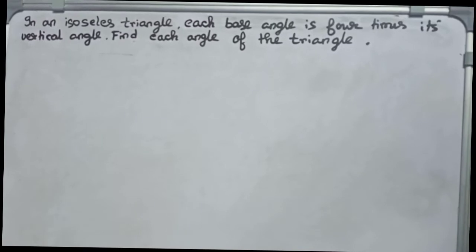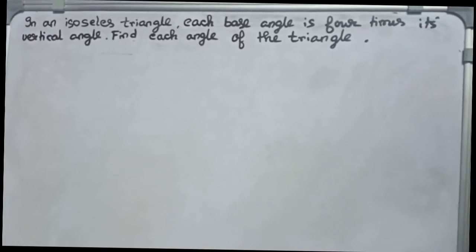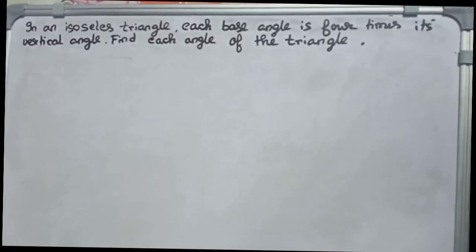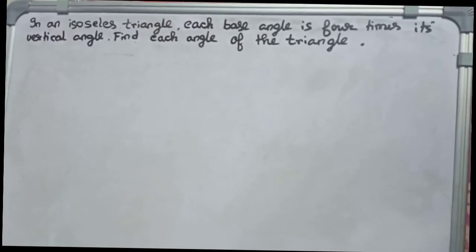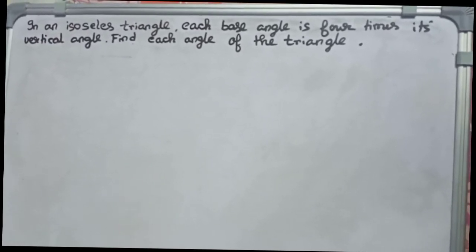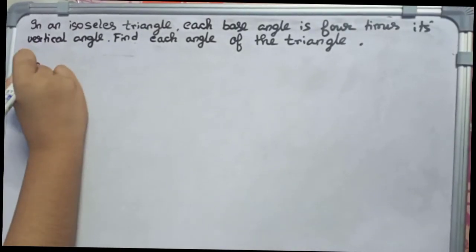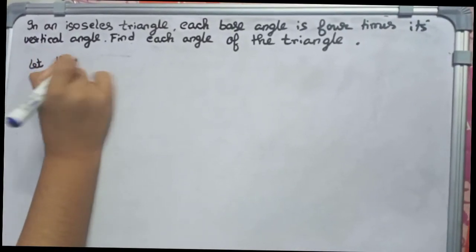Hello guys, welcome to this video. In this video, our question is: in an isosceles triangle, each base angle is four times its vertical angle. Find each angle of the triangle. So let's start. First, we let the vertical angle